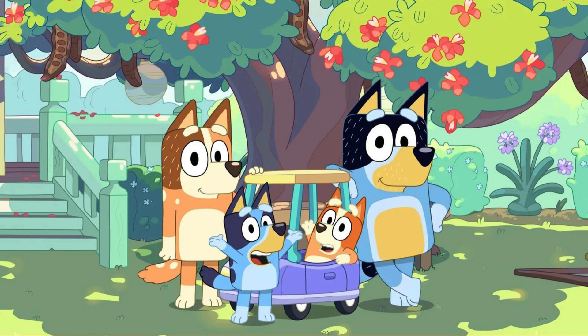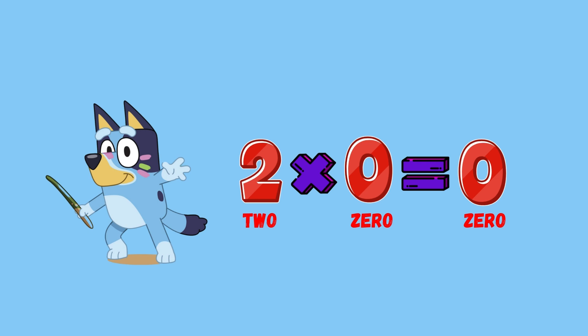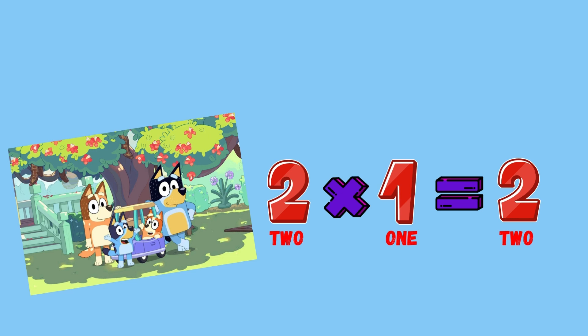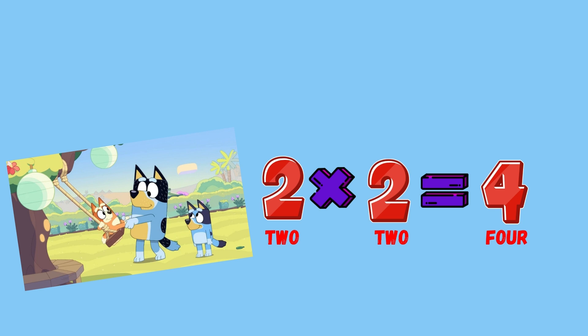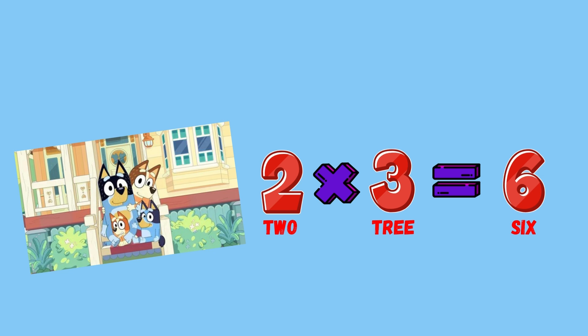Two times zero equals zero. Two times one equals two. Two times two equals four. Two times three equals six.